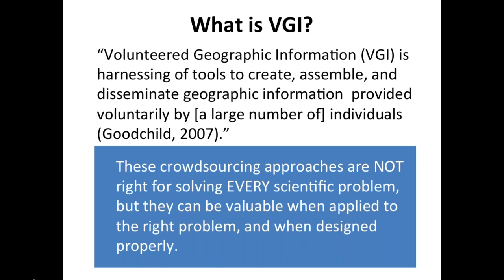A related term is volunteer geographic information, or VGI. Many may be familiar with participatory mapping or PPGIS. VGI, as Goodchild dubbed it, comes out of that discipline — it's harnessing the tools to create, assemble, and disseminate geographic information provided voluntarily by a large group of individuals. These crowdsourced approaches are not right for every scientific problem, but they can be valuable when applied to the right problem, designed properly, and using robust scientific methods.